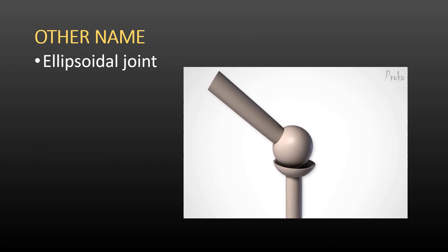The other name for the condyloid joint is the ellipsoidal joint, as ellipsoidal refers to an oval-shaped structure. As you can see in this diagram, there is an oval-shaped structure — the condyle — present at the end of one bone, which is why this joint is also called the ellipsoidal joint.